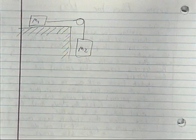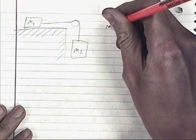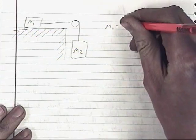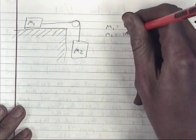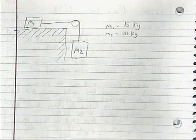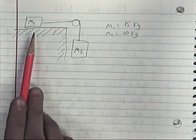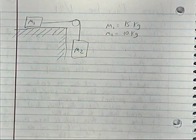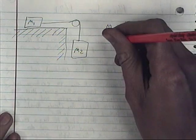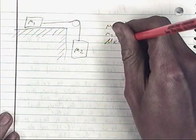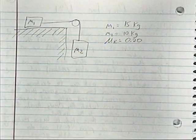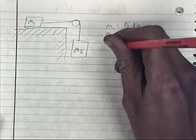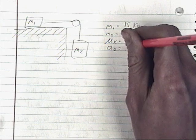Let's plug in some numbers. Mass one is 15 kilograms, mass two is 10 kilograms. Mass one sits on a countertop with friction, and we'll set the coefficient of friction equal to 0.20. We want to find the acceleration for mass two — how fast does it accelerate downward?